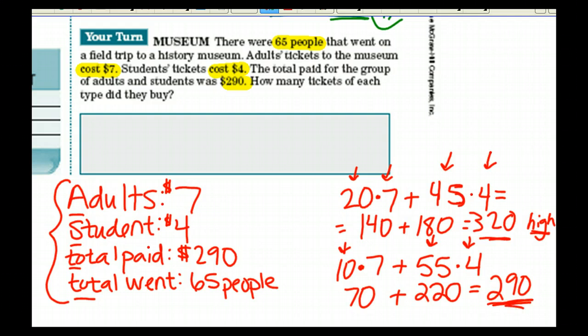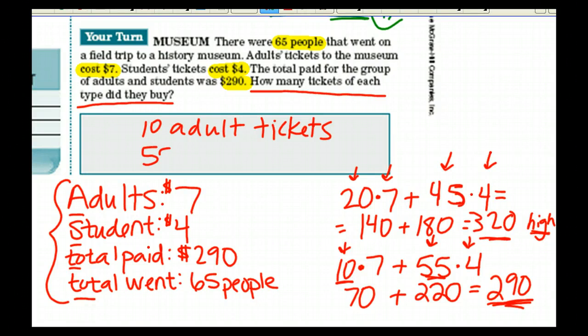I go back up. What do they want to know? They want to know how many tickets of each type did they buy. I look at my problem and I say, they got 10 adult tickets and they got 55 student tickets. I'll be checking to make sure this is right tomorrow. See you then.